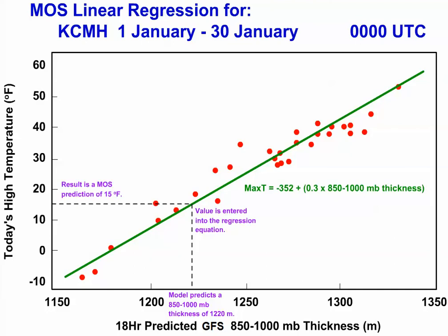As an example, let's look at how MOS could predict daily high temperatures as a function of a dynamic model 18-hour forecast for 1,850 millibar thickness. First, a series of high temperature observations is collected and matched with the corresponding dynamic model 18-hour predictions of 1,850 millibar thickness.